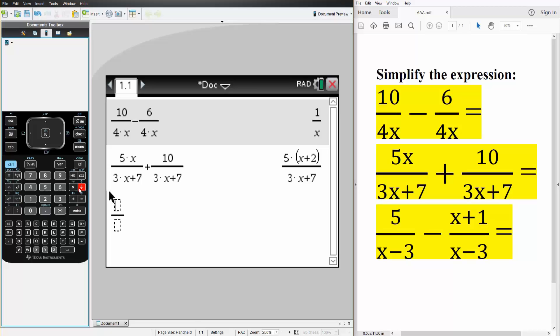And finally, the last one. Control, division, we have 5 divided by x minus 3 minus control, division, we have x plus 1 divided by x minus 3.